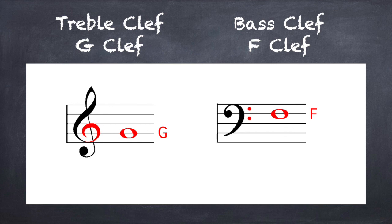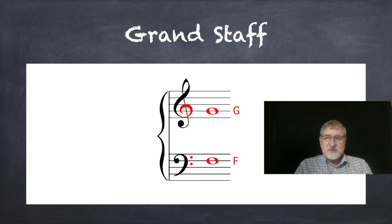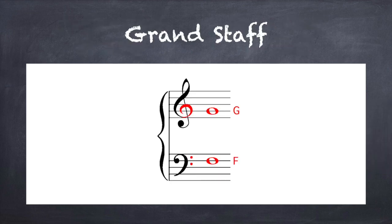Clef signs are used to indicate the position of notes within the staff. The treble clef is also known as the G clef, and it shows the position of the note G. The bass clef, or F clef, shows the position of F. When the staves are used together, they're called the grand staff.